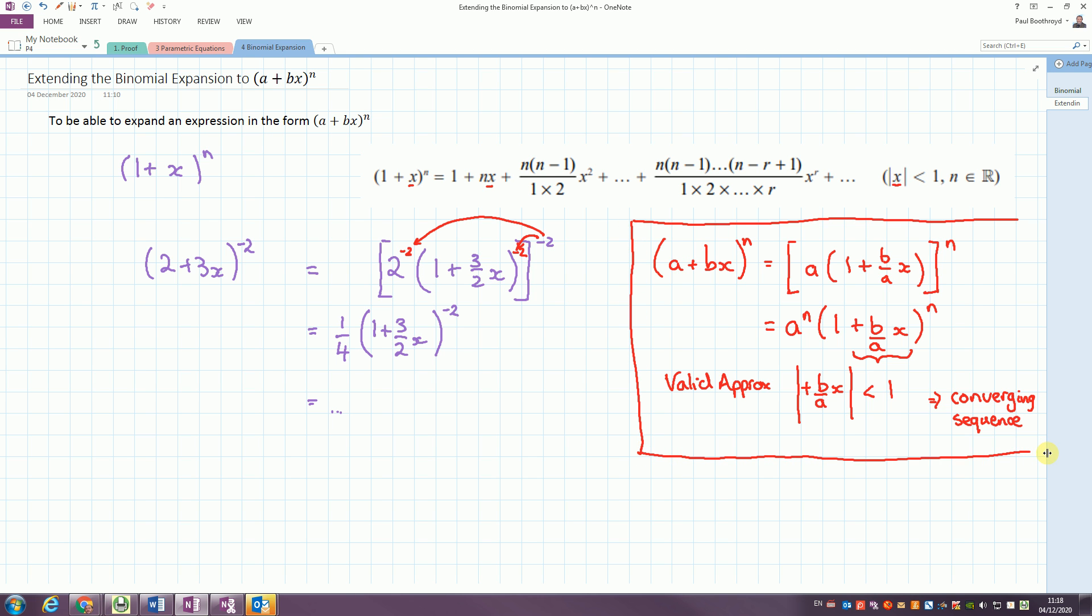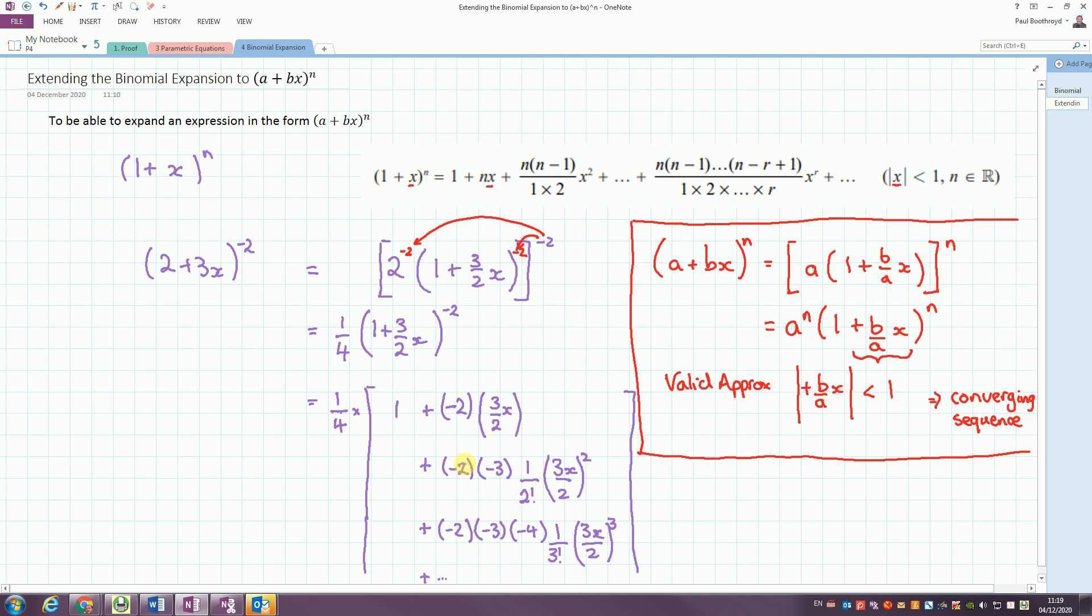I'll just quickly jot this in. I don't think there's any real problems with doing the expansion. Let's just show where these parts came from. So quickly going through, minus 2 comes from the n that we're doing. I've got a quarter times all of this bracket. The value of x is the 3 over 2. So now I've got an n, n minus 1, the 2 factorial, or 2, and x squared. We've got the n, the n minus 1, n minus 2, the factorial term, and the x cubed. So that's where those parts all came from.